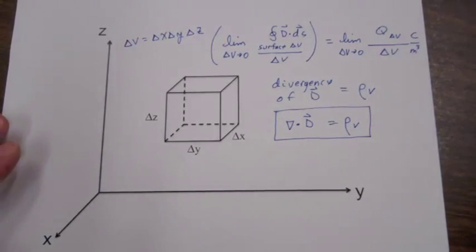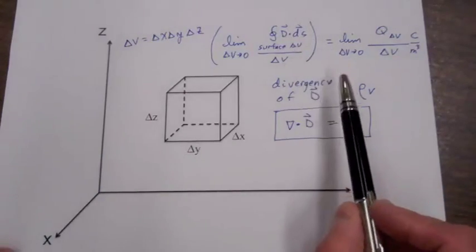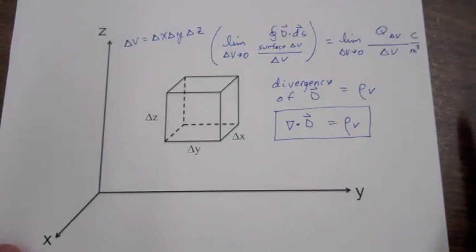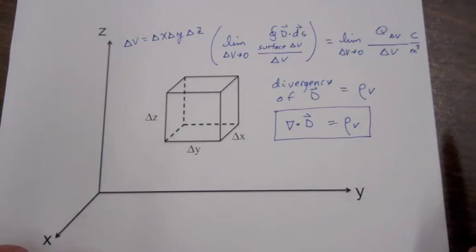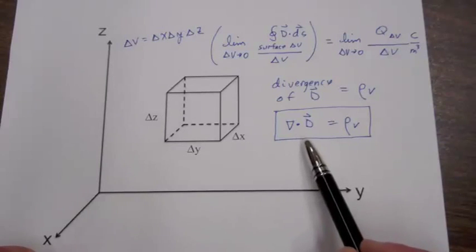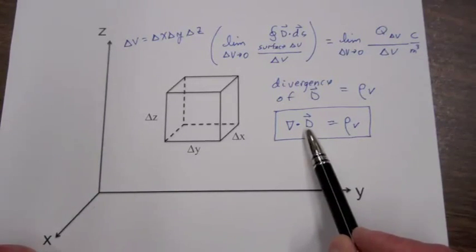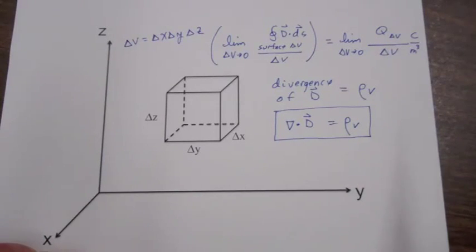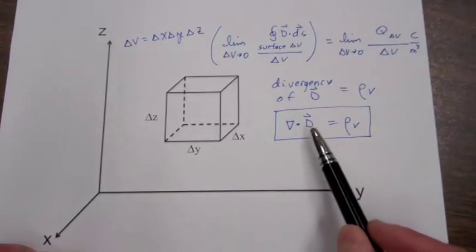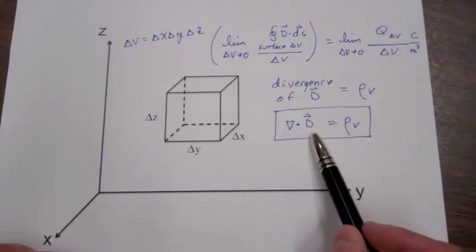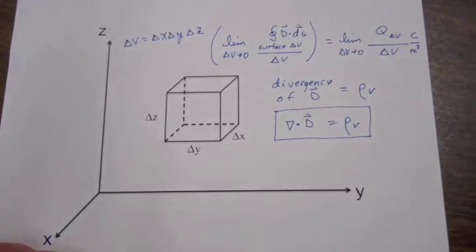We now have a conceptual understanding for this operation of divergence of a vector field, and specifically the case for Gauss's law and the connection between electric charge and electric flux. There remains the mechanics of how you actually find the divergence of a vector field given its components, and we will look at doing that in Cartesian coordinates in part two.